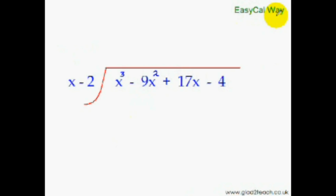Now let's see the easy cal way or the faster way of doing this algebraic division. So you start by dividing the first term of this dividend by the first term of this divisor to get the first term of the answer.